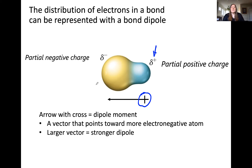Because this is a vector, the larger the dipole moment, the stronger the dipole, meaning there is a less equal sharing of electrons — one atom has a much greater electronegativity than the other.